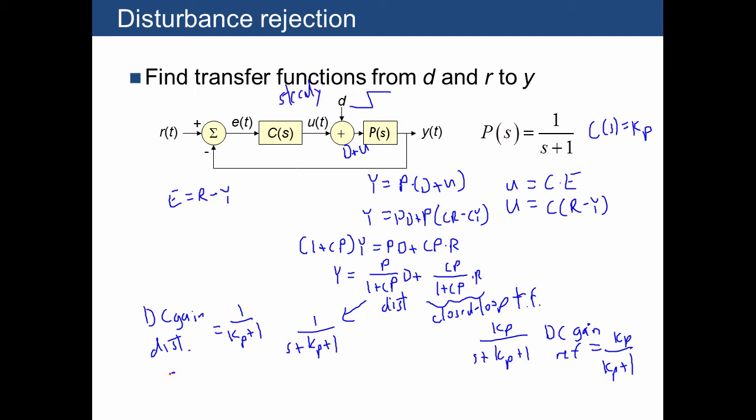The drawback, of course, is that if you have a steady disturbance, even though this number can be small, it's not 0. So then the question is, what if you really want to be able to reject a steady disturbance and try to get Y as close to being unaffected as possible?